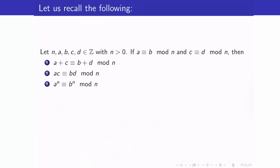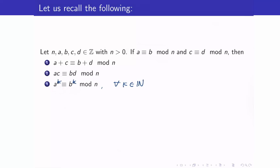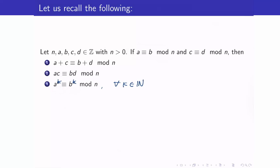Here are more results regarding congruence modulo n. If a is congruent to b and c is congruent to d modulo n, then adding both sides gives a plus c congruent to b plus d. If we multiply them, the products are also congruent. And if a is congruent to b and we raise both to k, then a^k is congruent to b^k. It is a good exercise to prove these results.